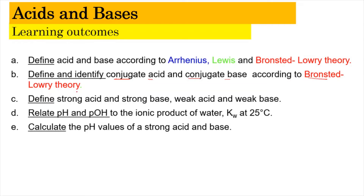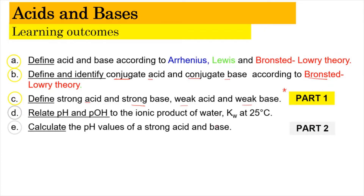Next, we're going to define and identify the conjugate acid and conjugate base according to the Bronsted-Lowry Theory. Last but not least, we're going to define strong acid, strong base, weak acid, and weak base. Learning outcomes A, B, and C will be covered in Part 1, while outcomes D and E will be covered in Part 2.